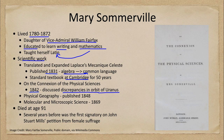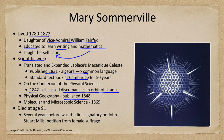She published Physical Geography in 1848 and then a work on Molecular and Microscopic Science in 1869, including diagrams such as the one that we see here.